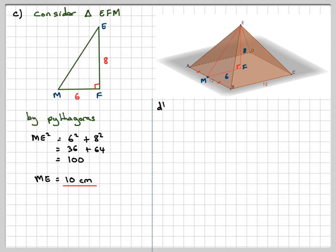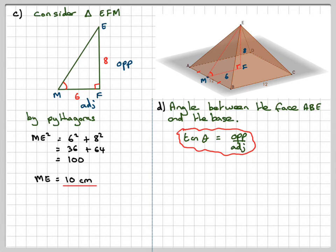The last part says find the angle between the face, this face here, and the base. So what I need to do is I need to calculate this angle here. That's going to give me, using the same triangle, this is adjacent, this is going to be opposite. And then using tan is opposite over adjacent, I'm going to have the tan of EMF is going to be 8 over 6. EMF is going to be tan to the minus 1 of 8 over 6. Making sure my calculator is in degrees, that gives me 53.1301 degrees, and rounded off to 1 decimal place is 53.1 degrees.